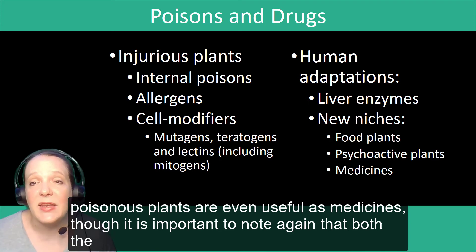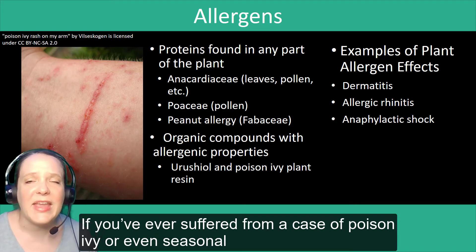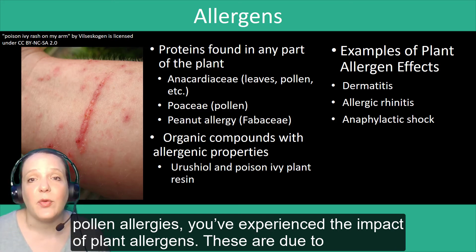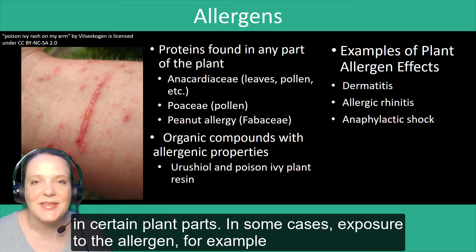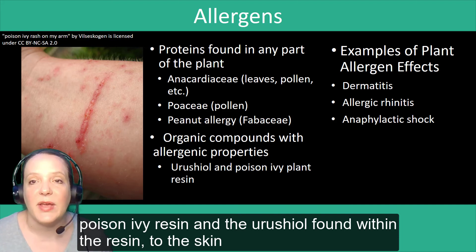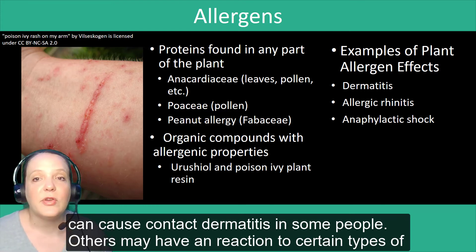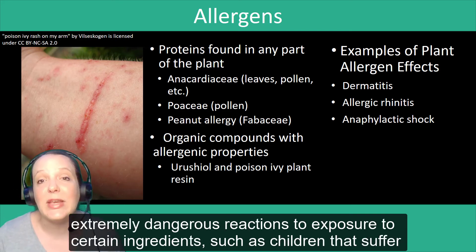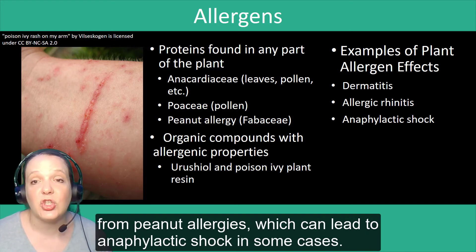Some poisonous plants are even useful as medicines, though it's important to note again that both the dose and the intent determine its role as a poison or a medicine. If you've ever suffered from a case of poison ivy or even seasonal pollen allergies, you've experienced the impact of plant allergens. These are due to either proteins or specific organic compounds found in certain plants and in certain plant parts. Exposure to allergens — for example, poison ivy resin and the urushiol found within the resin — can cause contact dermatitis in some people. Others may have a reaction to certain plant pollens, resulting in allergic rhinitis. Some can have extremely dangerous reactions, such as children who suffer from peanut allergies, which can lead to anaphylactic shock in some cases.